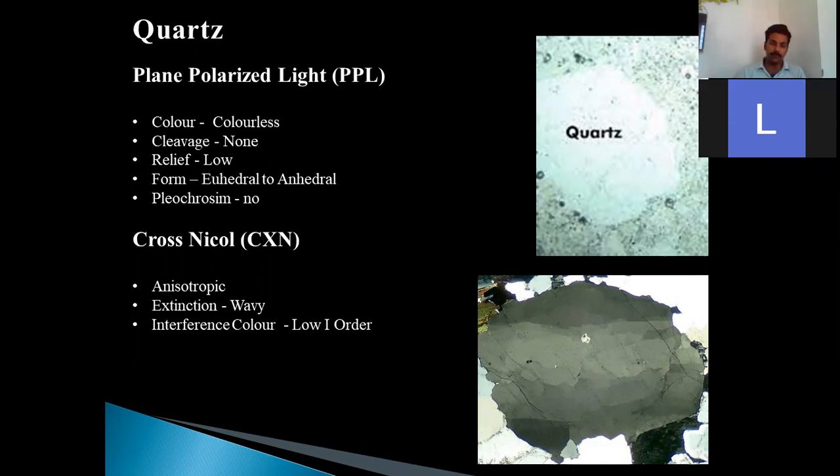Pleochroism - no, we cannot find any pleochroism in it. Now let us see the properties under cross-nicol. First, we must understand that it is not necessary that the mineral grain will show all the properties. The mineral grain can show some selective properties only. In cross-nicol position, this mineral grain is anisotropic. So if it is anisotropic, that means it will not turn into black.